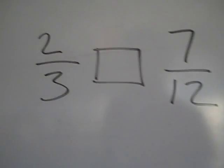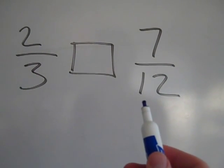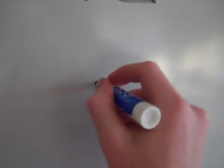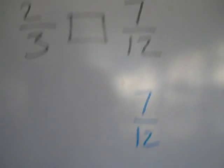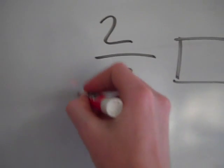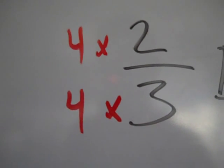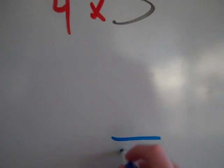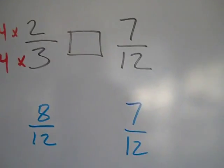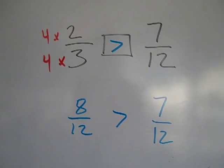Let's look at more examples. Here I have two-thirds and seven-twelfths. I'm going to look at twelve and think about its multiples — doesn't three go into twelve? Can I multiply three and get twelve? So this is an example where I won't even change the seven-twelfths. The two-thirds has to be changed into twelfths: in order to get three to be twelve I do times four, and I have to do the same to the numerator, so two times four gives me eight. I have eight-twelfths and seven-twelfths, and eight-twelfths is more, so two-thirds is greater than seven-twelfths.